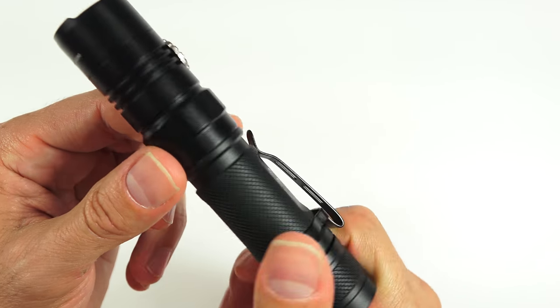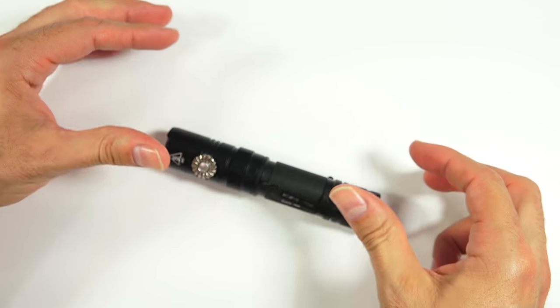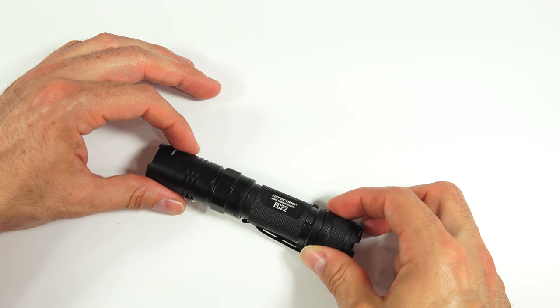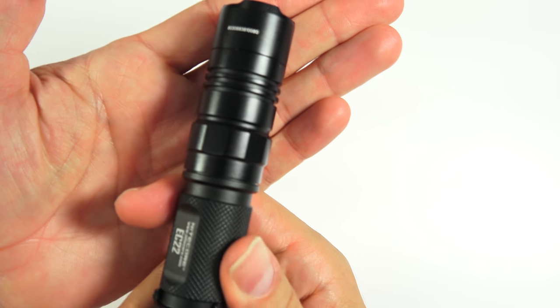Forward of that, there is a ring here with some anti-roll, so it won't roll. But if you have the pocket clip on it anyway, not going to roll, not a problem.